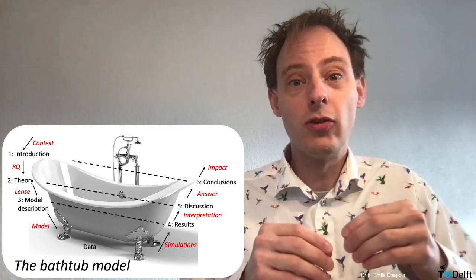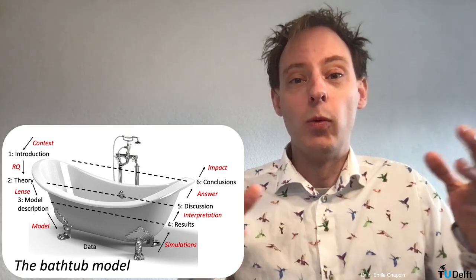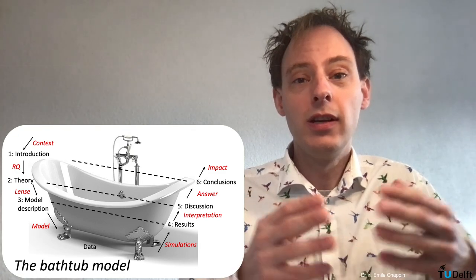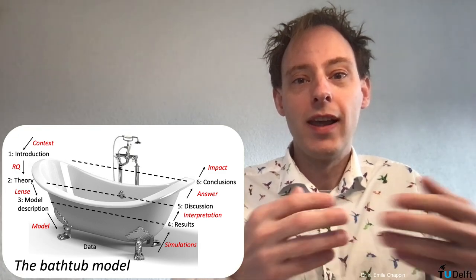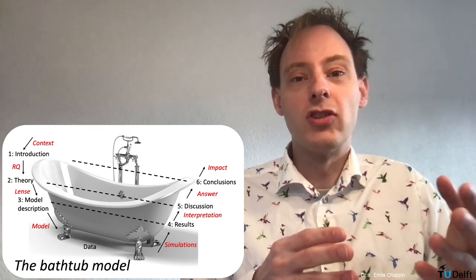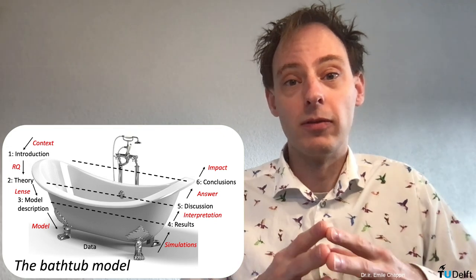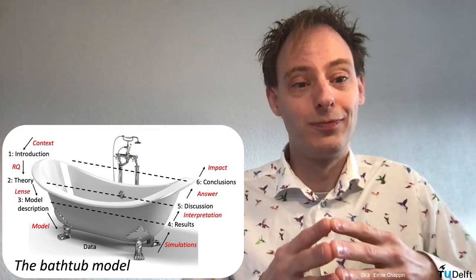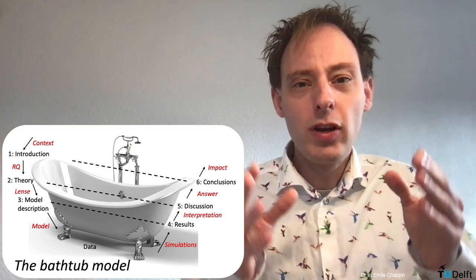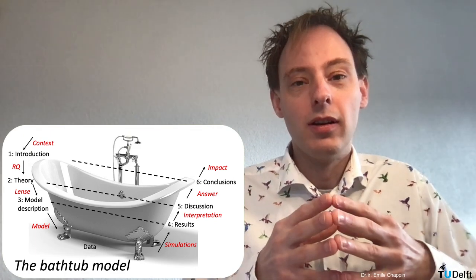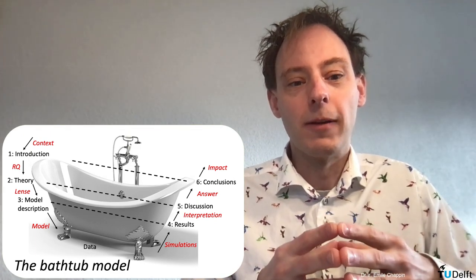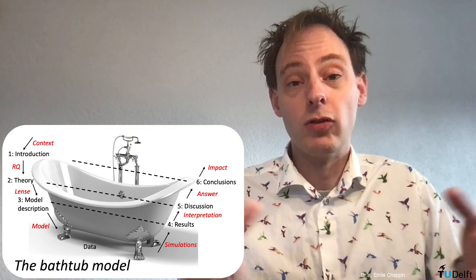That research question flows into section 2, where you select a theory, and this theory provides a lens. It could also be a method section. And this differs quite widely between different modeling papers or approaches. But through that lens or through that method, you see the modeling. And the model description then leads to a model.